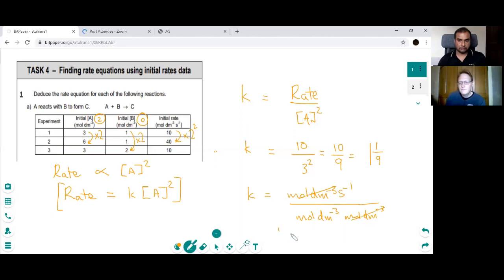And the moles per decimetre cubed cancel. And if we move the units on the bottom to the top, the signs of the powers change. That gives us the units: moles to the minus 1, dm to the plus 3, seconds to the minus 1. So our rate constant is 1 and 1 ninth, mol⁻¹ dm³ s⁻¹.